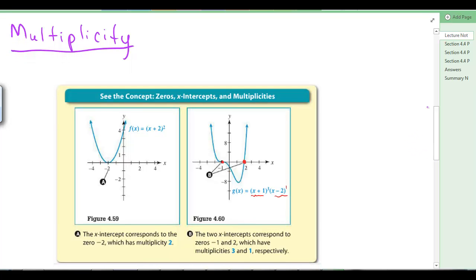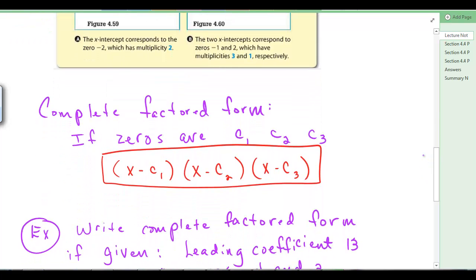Multiplicity. The x-intercept corresponds to the 0, negative 2. And right here, we see that that didn't go through the x-axis. It touched it and went back up. It has a multiplicity of 2, and you can see x plus 2 squared. That's a multiplicity of 2. Over here, there's two x-intercepts, negative 1 and 2. At 2, we have a multiplicity of 1. At negative 1, we have a multiplicity of 3. And again, we look at complete factored form. If the 0's are c1, c2, c3, then the complete factored form is x minus c1 times x minus c2 times x minus c3. No commas in between, parentheses mean multiply.